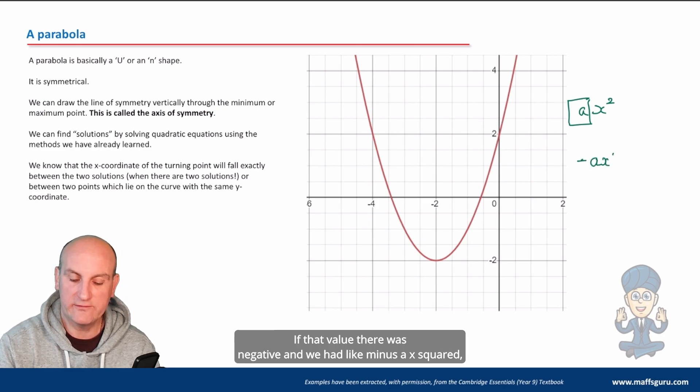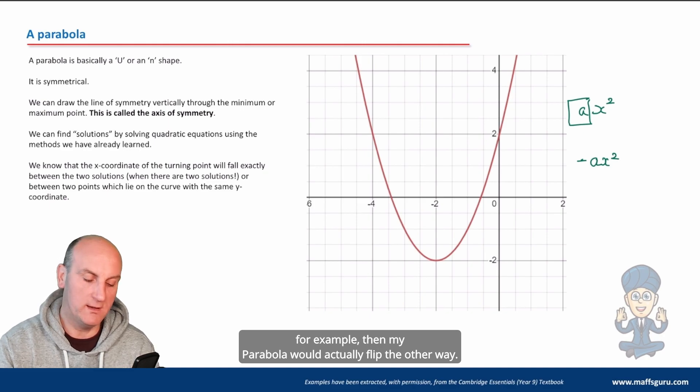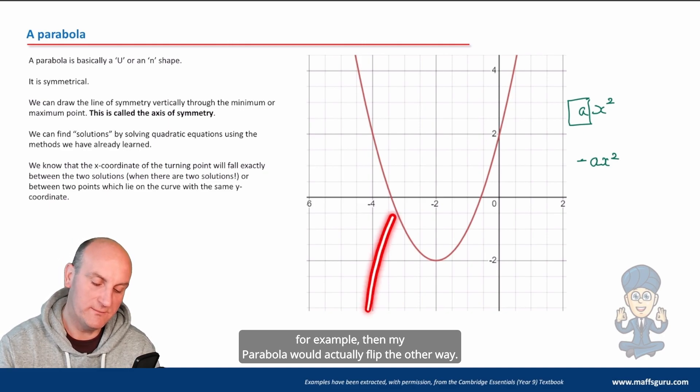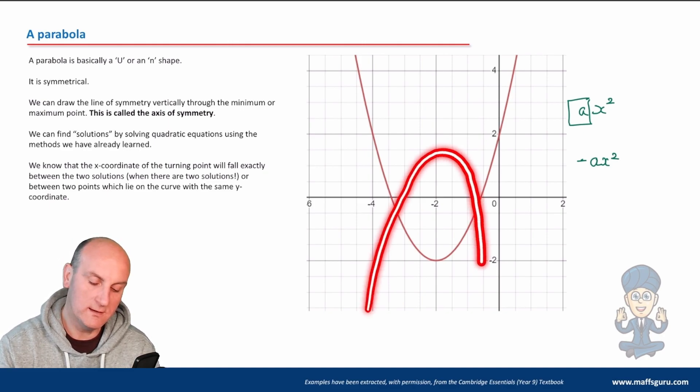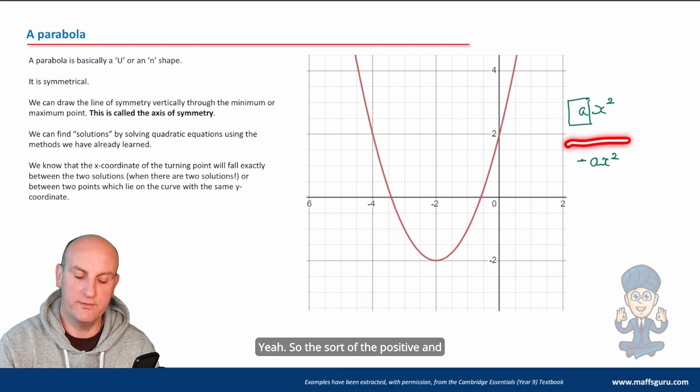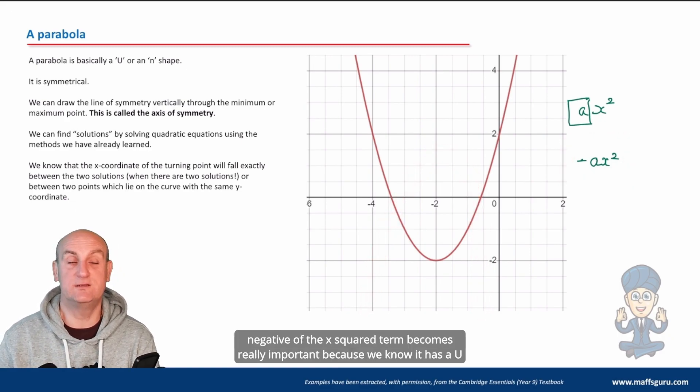If that value there was negative and we had like minus ax squared for example, then my parabola would actually flip the other way. The positive and negativeness of the x squared term becomes really important because we know it has a U or an N shape.